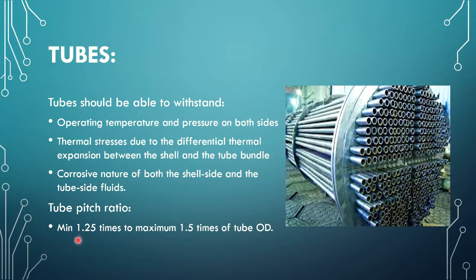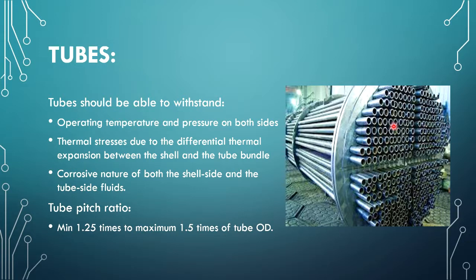The tube pitch ratio is normally between 1.25 to 1.5 times the outside diameter of the tube. One fluid passes inside the tubes and another fluid passes outside the tubes, and heat transfer takes place between them.